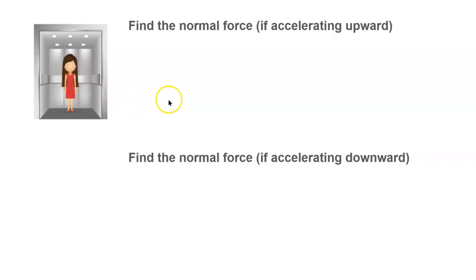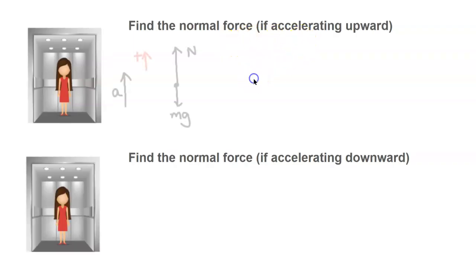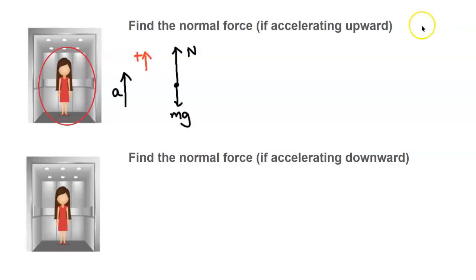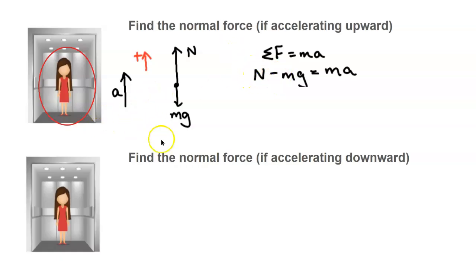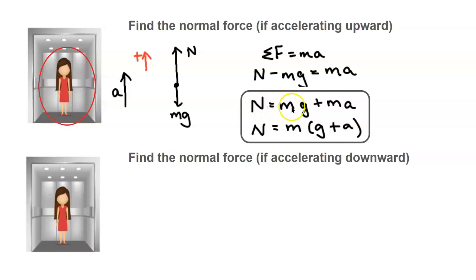Now let's look at an elevator problem. We're looking for the normal force when the elevator is accelerating upward. We draw the system boundary and make up positive. The two forces acting on the person are the normal force upward and her weight mg. Applying Newton's second law: normal force minus mg equals m·a. Solving for n: n equals mg plus ma, and factoring out m gives n equals m(g plus a).